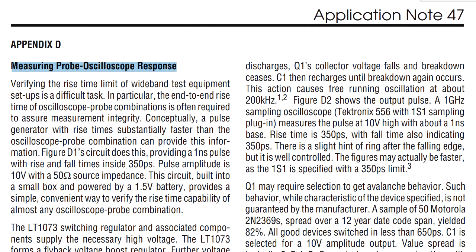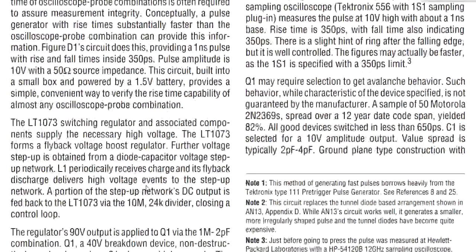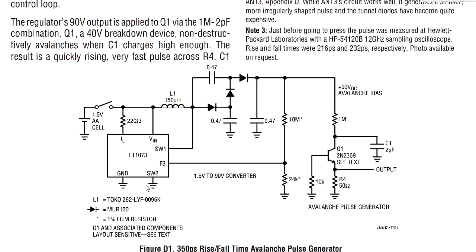This is a circuit designed for measuring the probe oscilloscope response. It's a classic circuit. Few people have done something better using garden variety parts. But figure D1 is the one we want, which is the circuit that Manute used here. And it basically provides a one nanosecond pulse with rising four times of approximately 350 picoseconds.